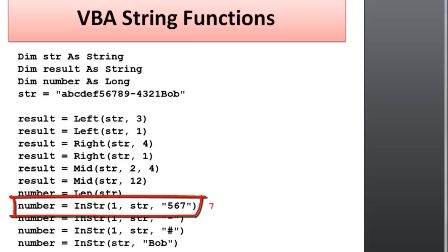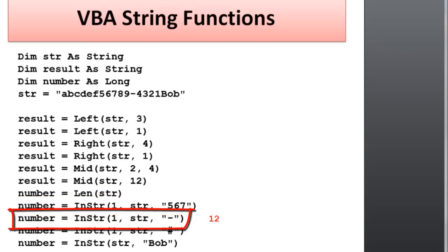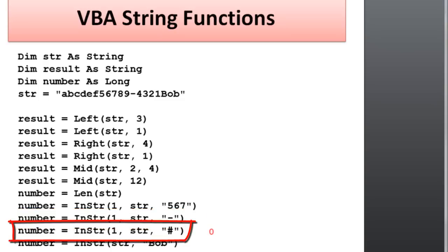InString returns where in a string a substring starts. So the five, six, seven starts at position seven in our substring. The minus, or the dash, starts at position 12 in a substring. The pound sign does not exist in the substring, so we get back a zero for that one. And finally then we search for Bob, and Bob is at position 17 in our substring. Notice it's a 19 character string, so 17, 18, and 19 are the last three characters of that string.